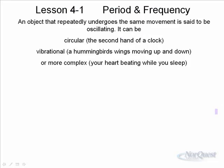An object that repeatedly undergoes the same motion is said to be oscillating, and it can be the circular motion of a clock, the hands of a clock, whether it's the second hand, the minute hand, or even the hour hand.